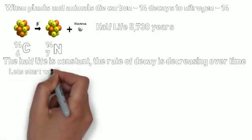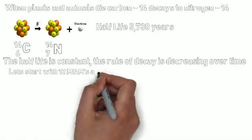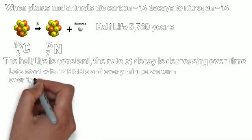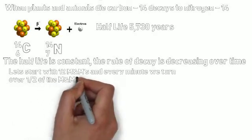It's like every 5,730 years you see the amount of material present cut in half. But the rate, in order for that to stay constant, the rate has to be decreasing. So to show you how this happens, or why this happens, we're going to do a little sample here with M&Ms.